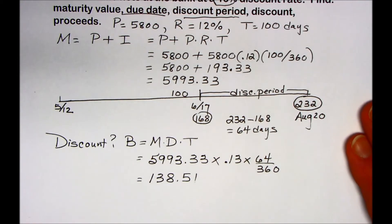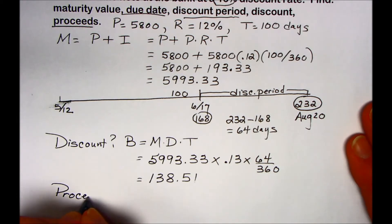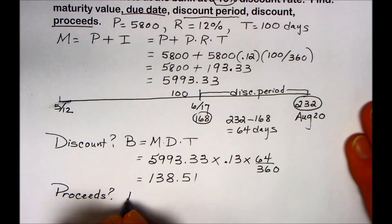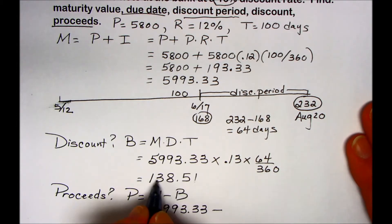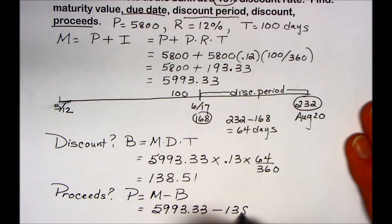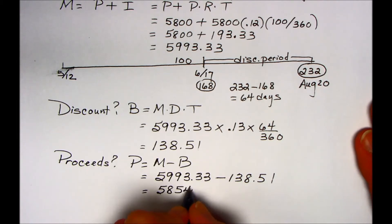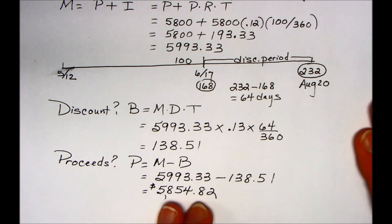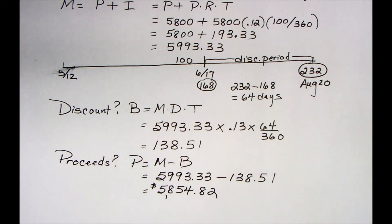The last question asks what are the proceeds from the sale of this note before it matures. Proceeds of a discounted note are found by taking the maturity value minus the bank discount. So we take the maturity value minus $138.51, giving us proceeds of $5,854.82. This is the amount Bob's Farm Equipment will receive when selling the note before it matures. Whoever received this note will then pay the bank the maturity value on August 20th.